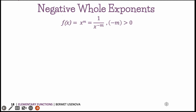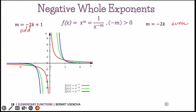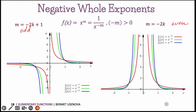Just like with monomials, the symmetry of functions with negative whole exponents depends on whether m is even or odd. If it's odd, the function is symmetric with respect to the origin; if it's even, it looks like an inverted parabola — this is how x to the power of minus 2 looks like. You can see the tendency of how the graph behaves as we increase m. Unlike monomials, the domain here is all real numbers except 0, because division by 0 is not allowed.